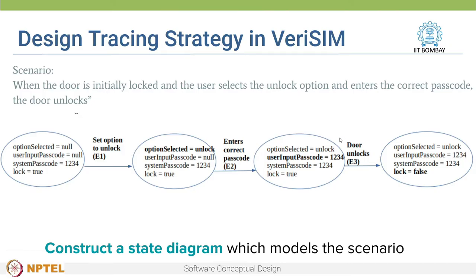These transitions correspond to messages in the sequence diagram. Based on these transitions, we see that the states — which contain data variables and their values — keep on changing. For example, when the user selects the unlock option, the value for the variable option selected changes to unlock. These variables are taken from the class diagram and the transitions are messages taken from the sequence diagram. Constructing these state diagrams helps you model different scenarios in the system and develop an integrated understanding of the class and the sequence diagrams.